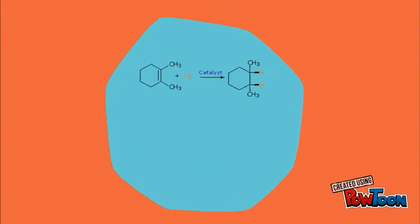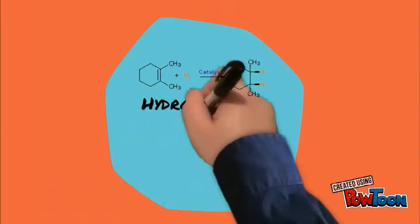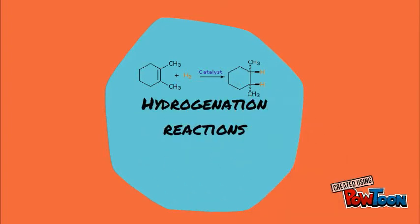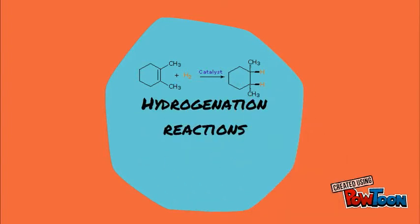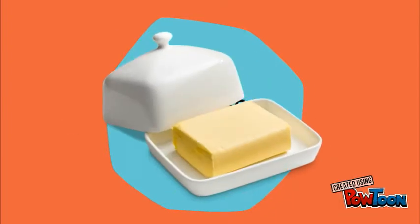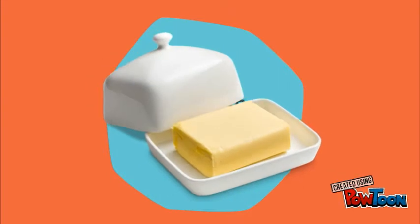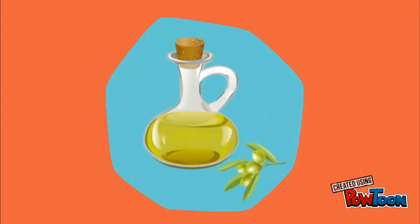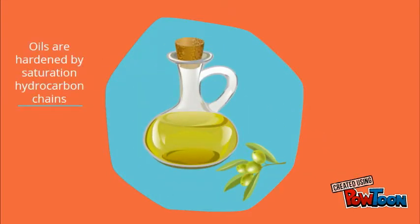Take, for example, the hydrogenation reactions of alkenes, which has an important role in the margarine industry. Oils, the raw materials for margarines, are hardened or converted into more useful solid fats by the saturation of the hydrocarbon chains with hydrogen.